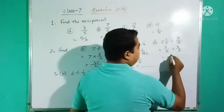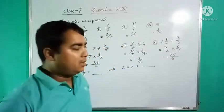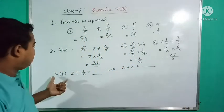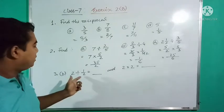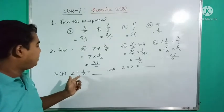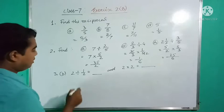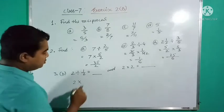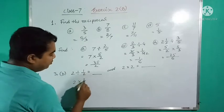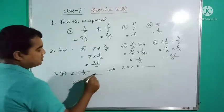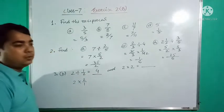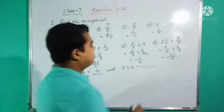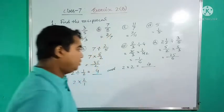Last question, number three: 2 and 2/5 divided by 1/2. Let's see, divide means the opposite, multiplication. So 2/1 times, 1/2 reciprocal is 2/1. This 2 times 2 answer is 4, and here 2 times 2 answer is 4.